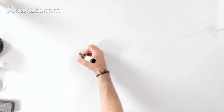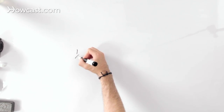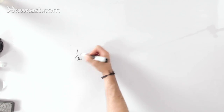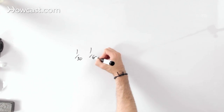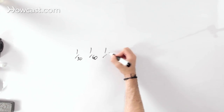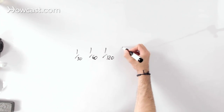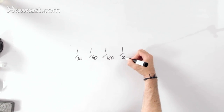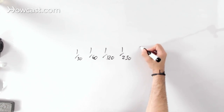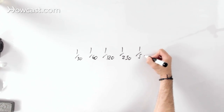Shutter speeds are an equation — it's always one over something else. Some really basic shutter speeds are one over a 30th of a second, one over a 60th, one over a 120th, one over a 250th, one over a 500th.